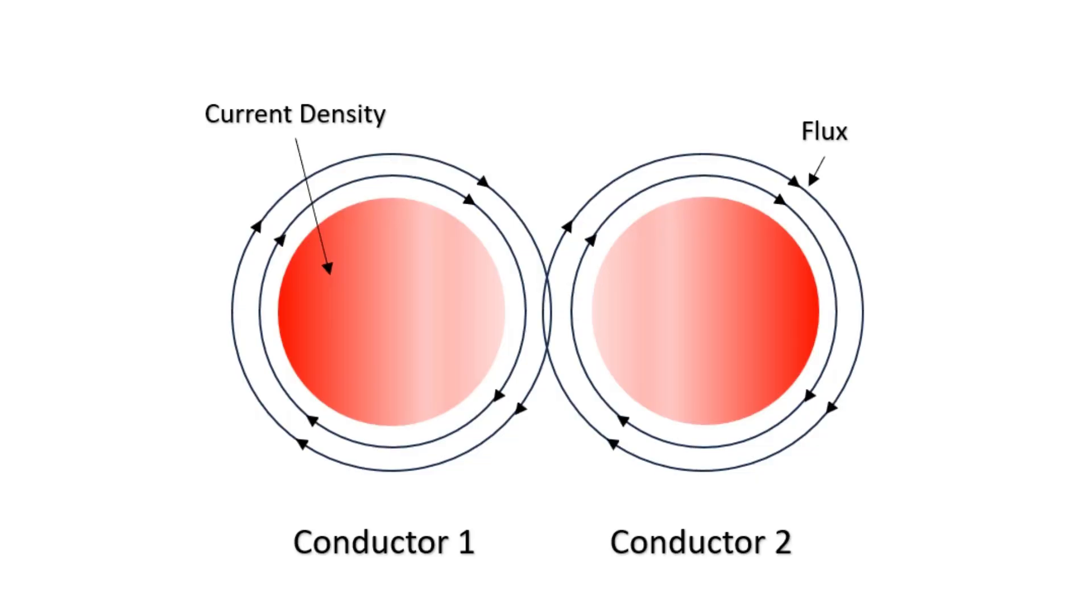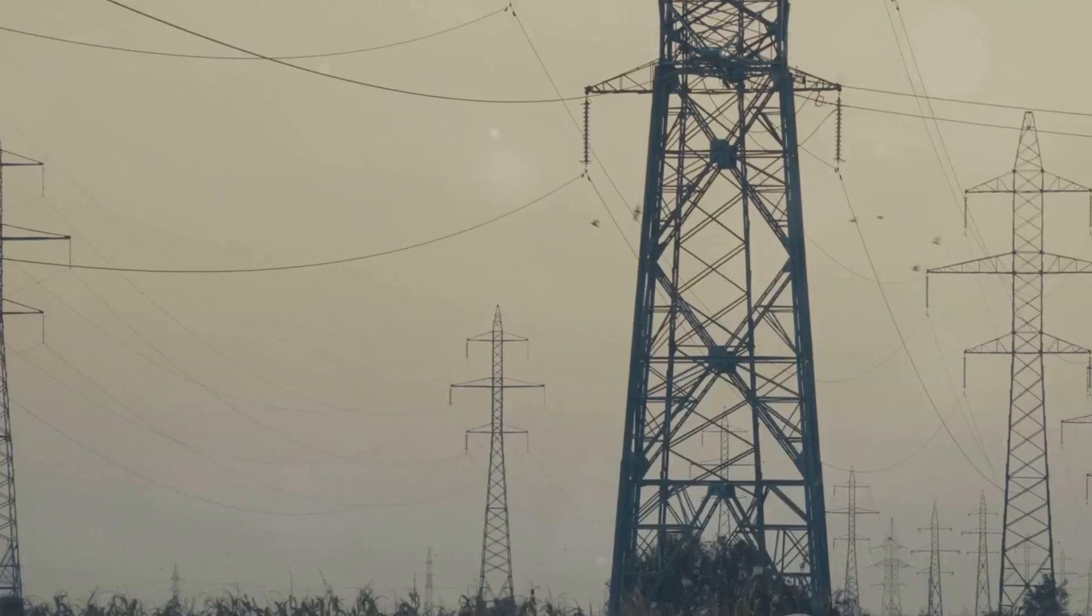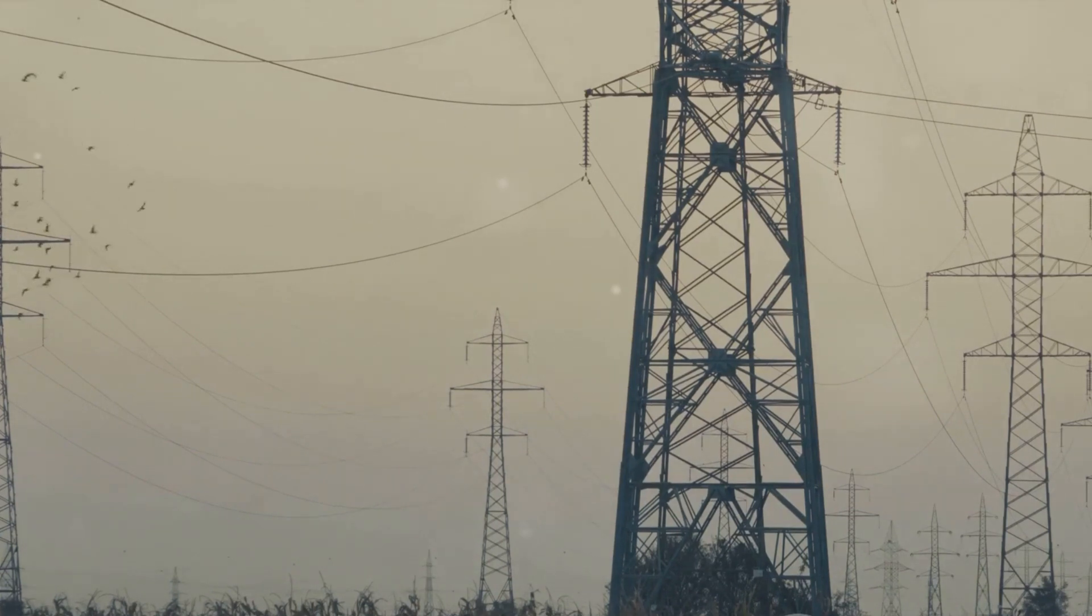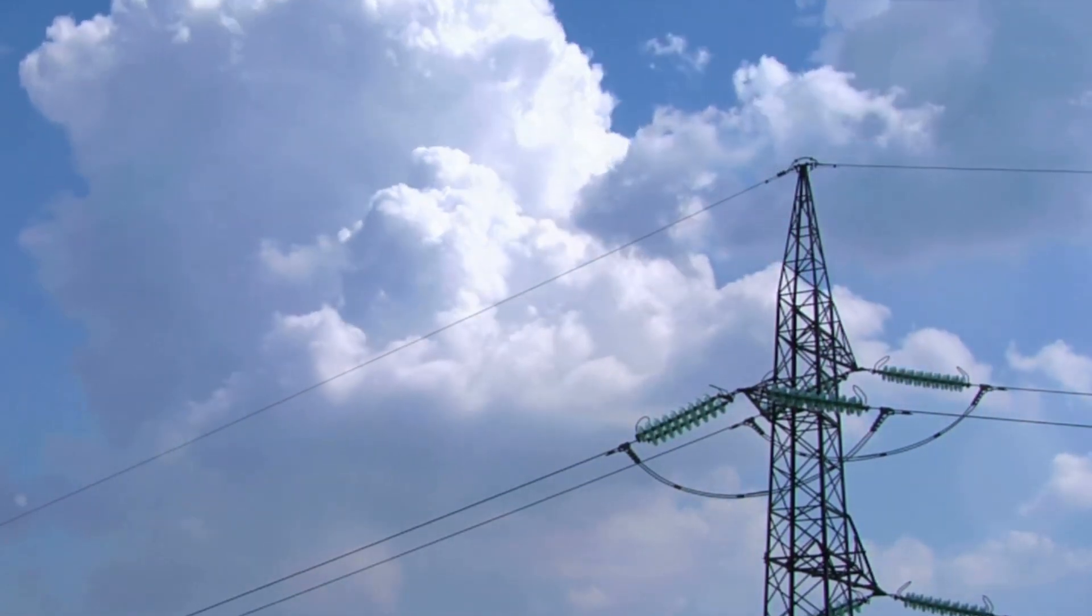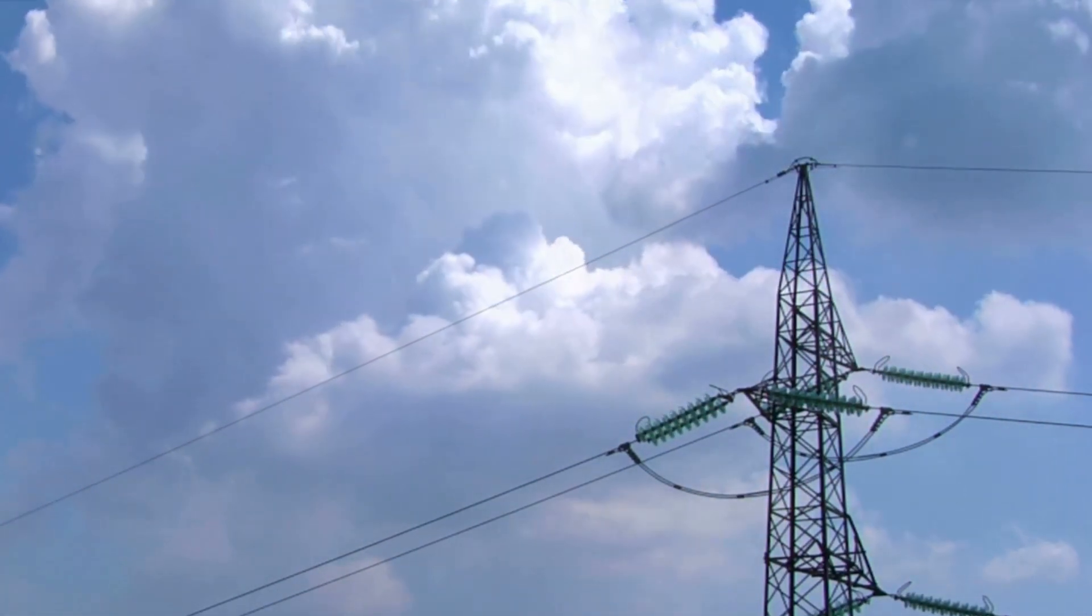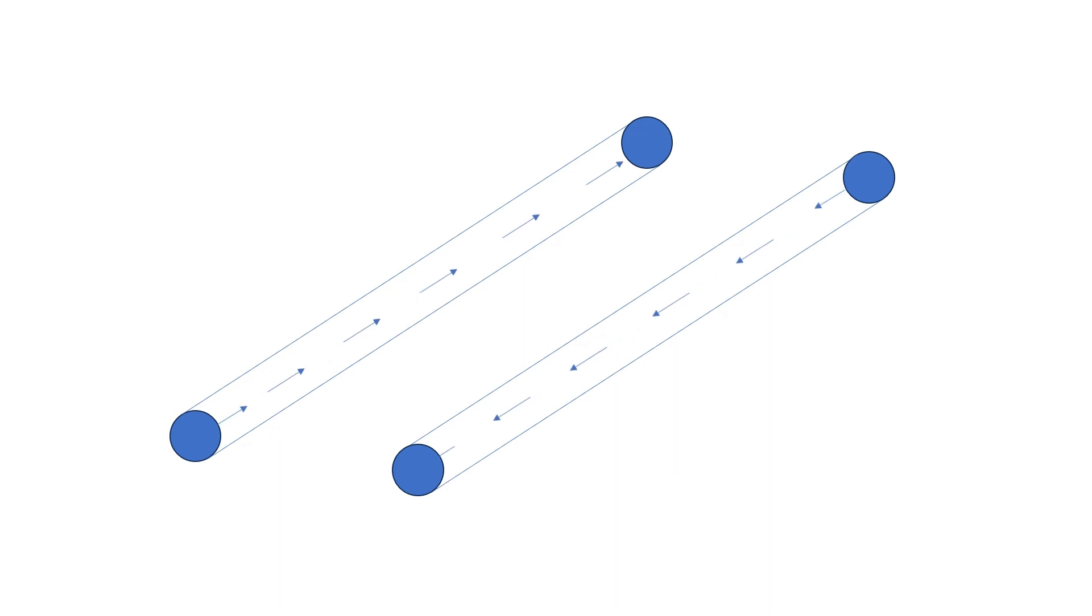Ever wondered why currents cluster in certain areas of a conductor when high alternating voltage is applied instead of a uniform distribution? This is the proximity effect. Essentially, it results from the increased apparent resistance of a conductor due to the presence of nearby conductors also carrying current.